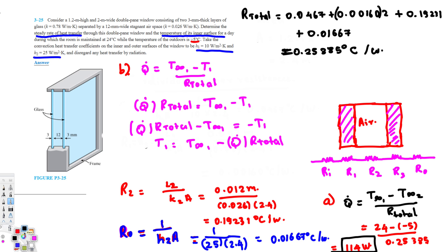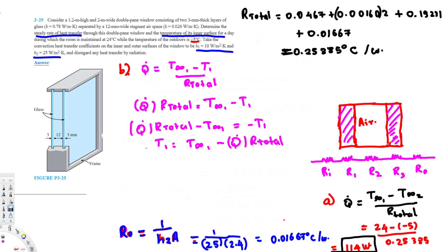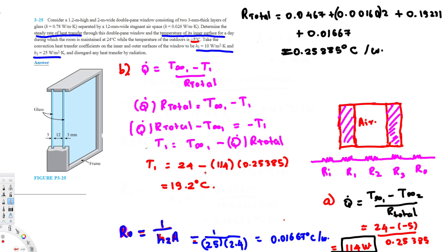Plugging in values: T1 equals 24 minus 114 watts times 0.04167 (R_indoor), wait — using the full R_total context as given in the solution: T1 equals 24 minus 114 times 0.25385, which gives 19.2 degrees Celsius. That's the inner surface temperature, and that's how we solve this type of problem.